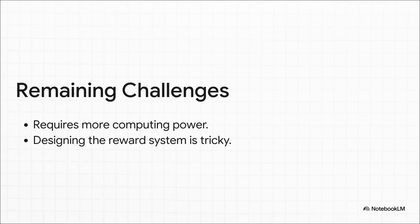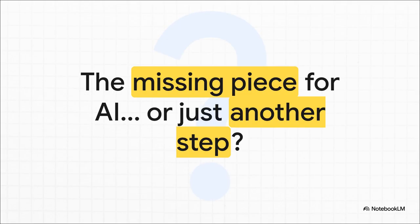So that leaves us with the big question. Is parallel thinking the missing piece of the puzzle that's going to finally unlock truly human-like reasoning in AI? Or is it another incredibly important, but still incremental step on a much longer journey? The answer isn't clear yet. But one thing is for sure, the path forward for AI just got a whole lot wider.